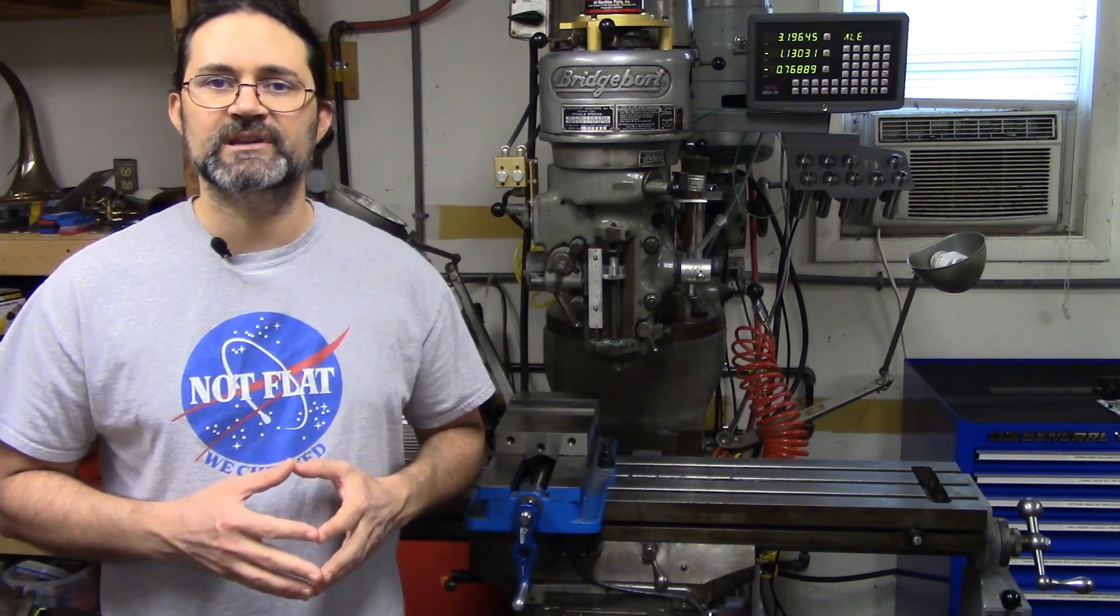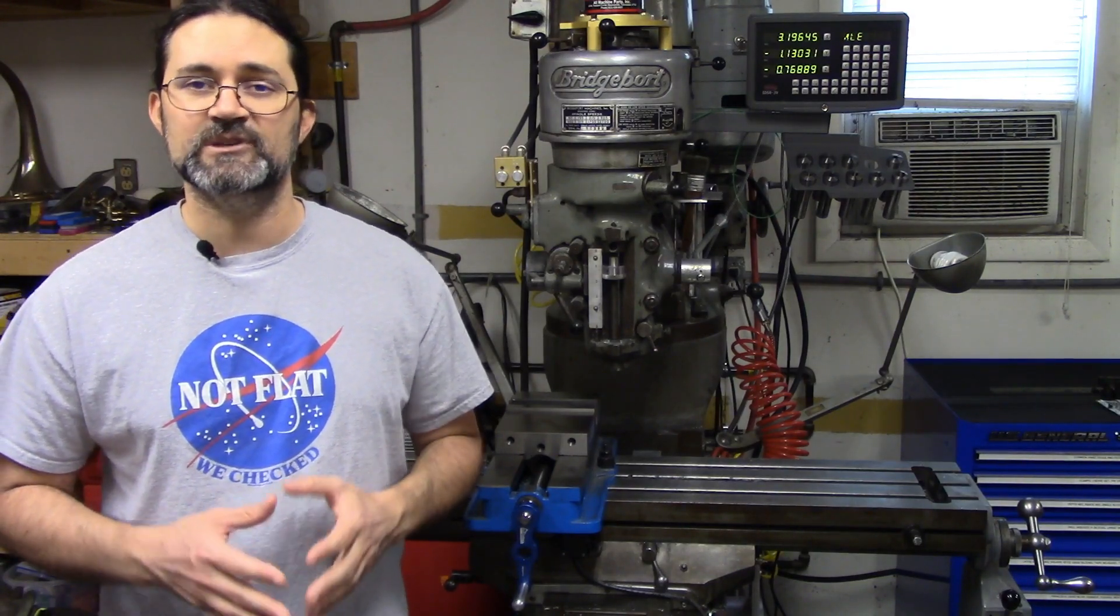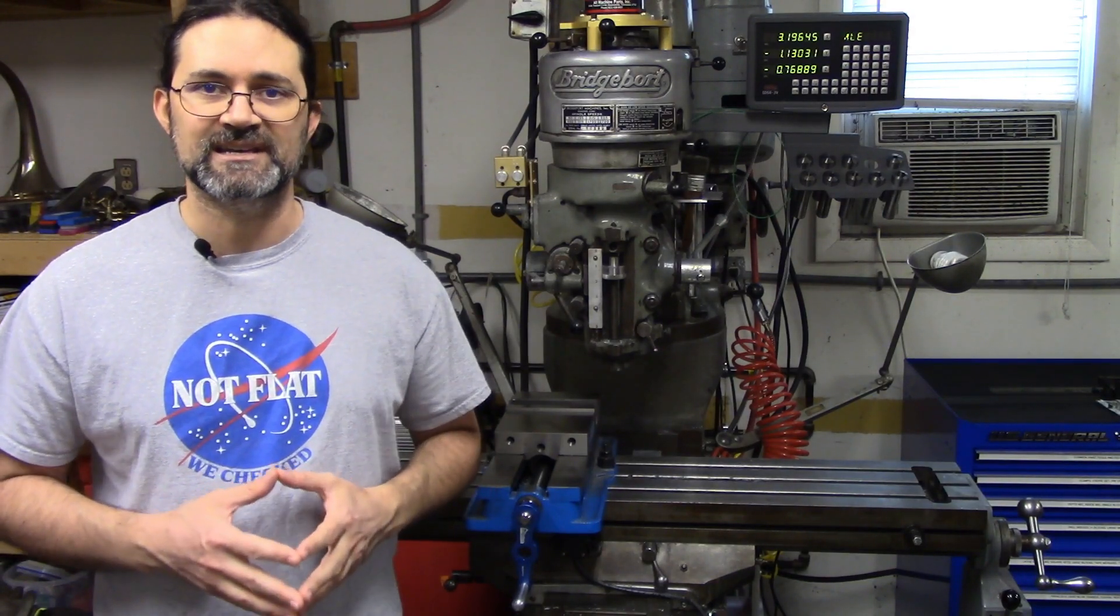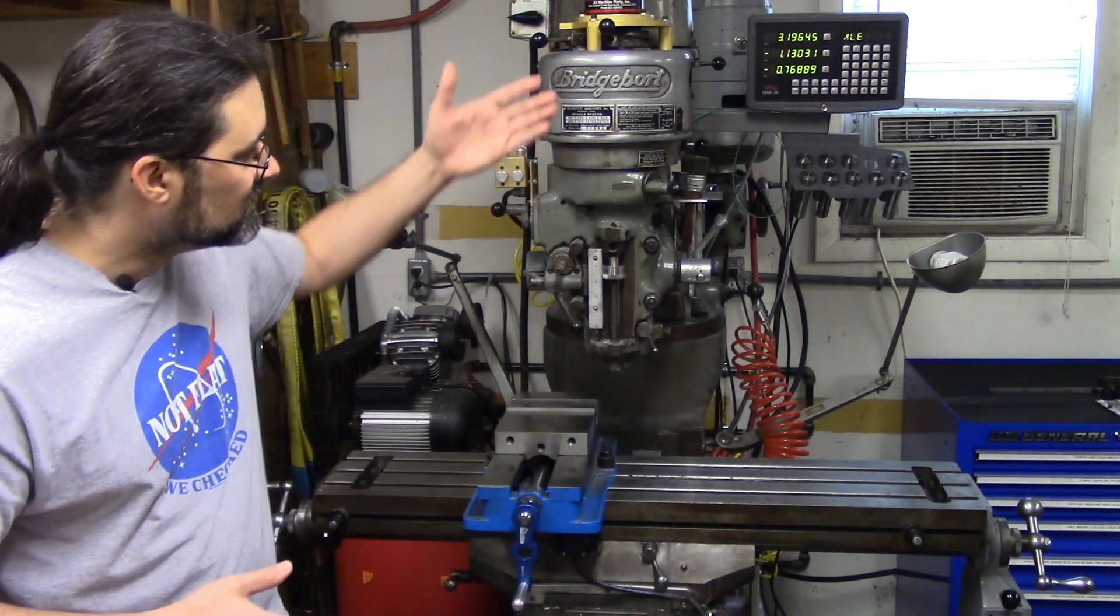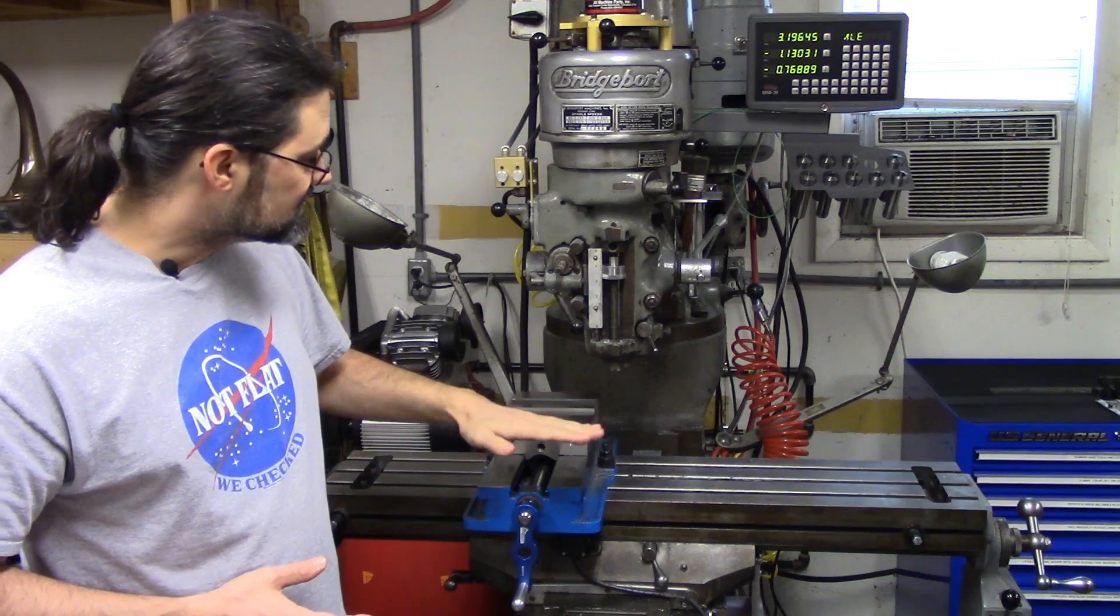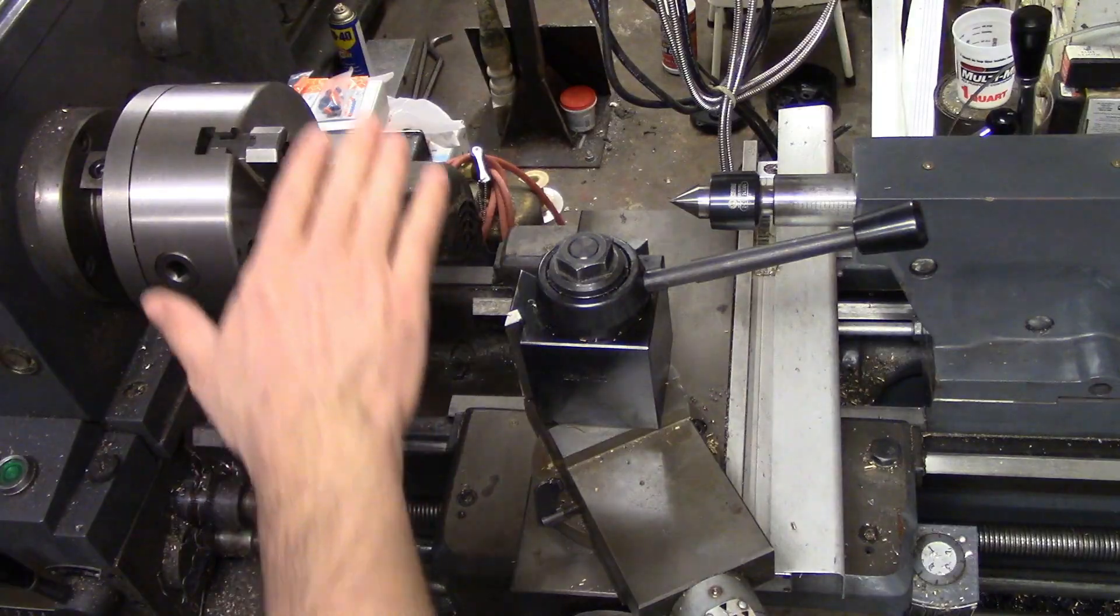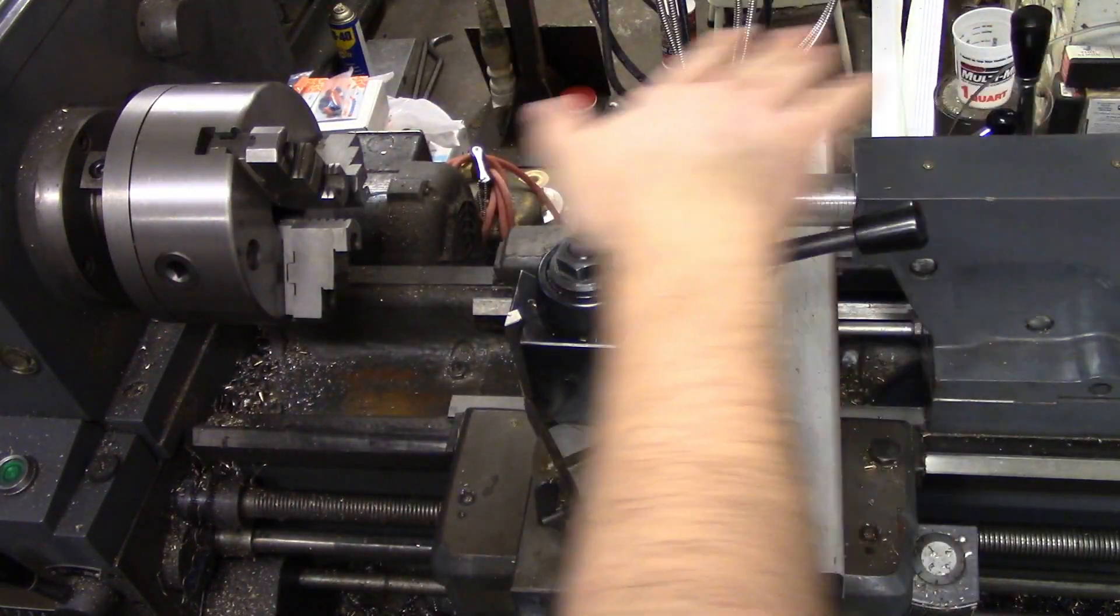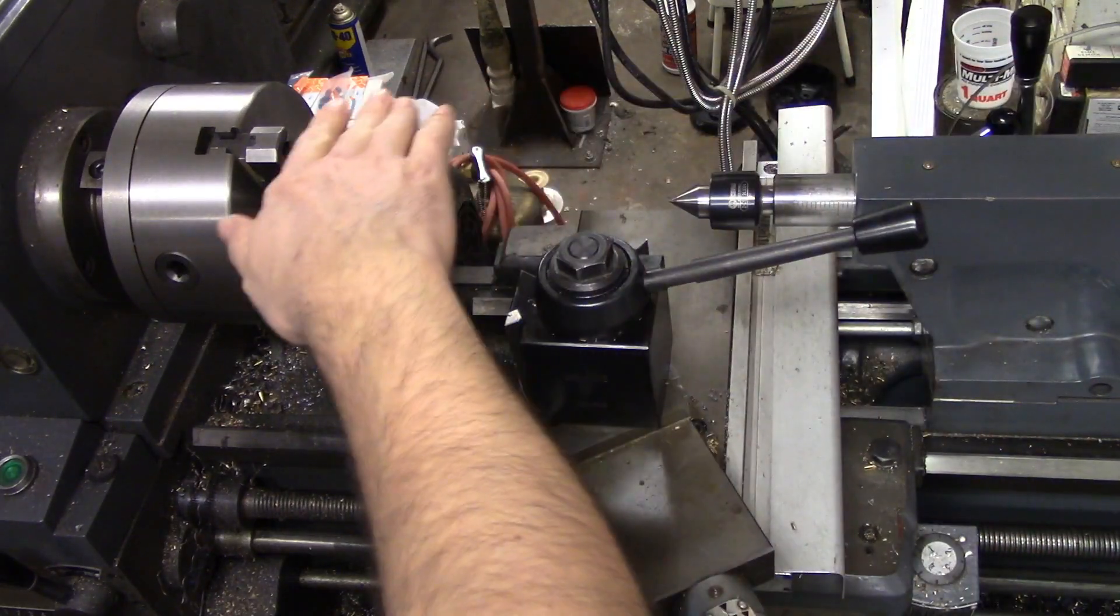Everything is oriented according to the spindle axis of the machine, which is always labeled as the Z axis. So on a vertical mill like this one, Z is going to be up and down. On a horizontal, it will be front to back. And on the lathe, Z is the longitudinal axis along the bed of the machine.